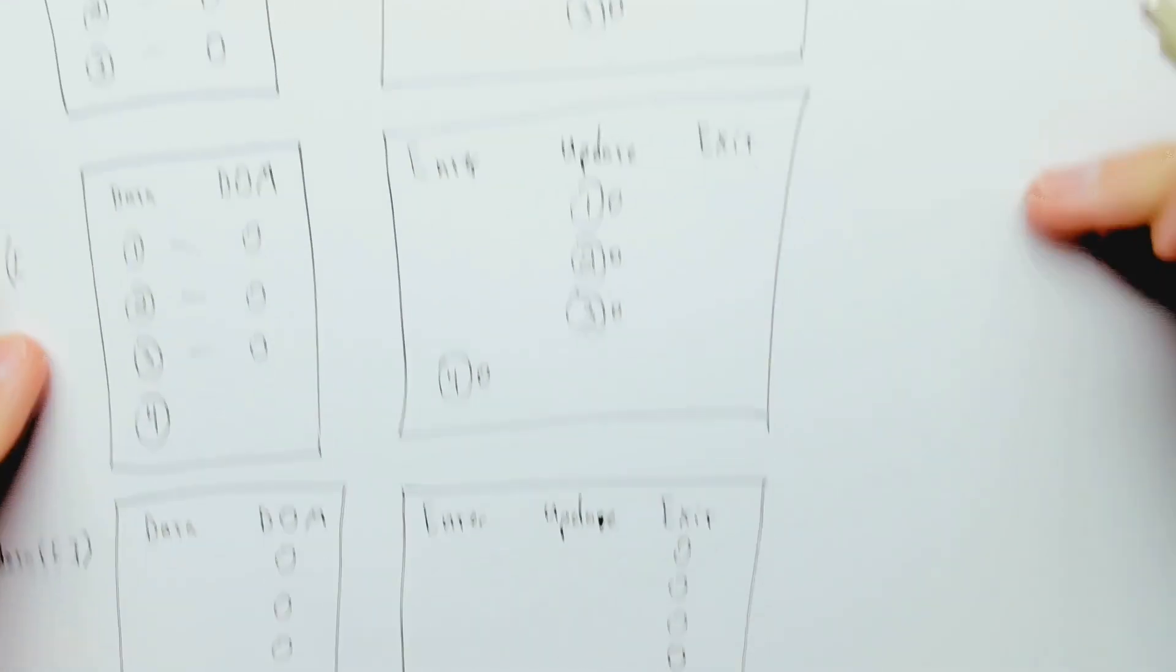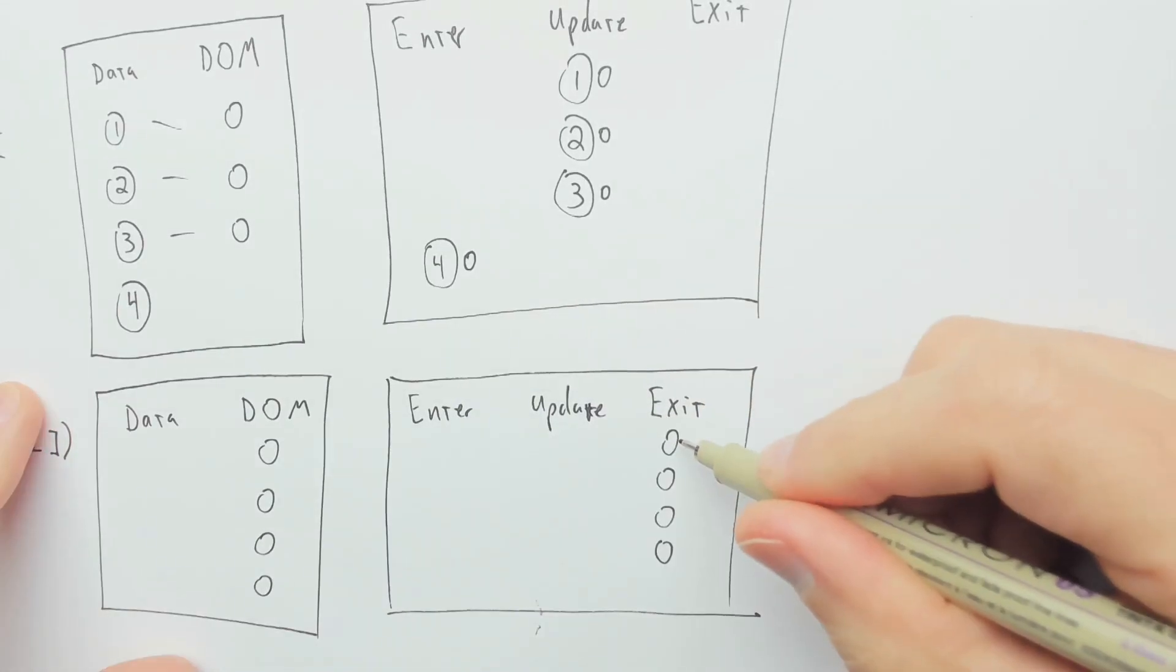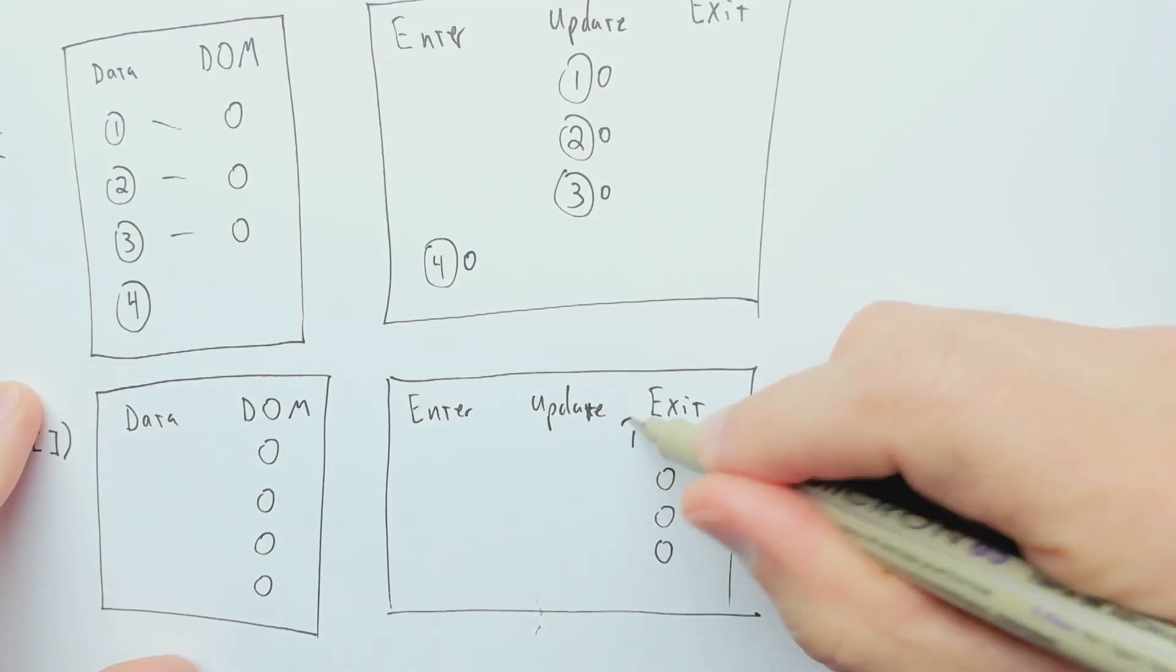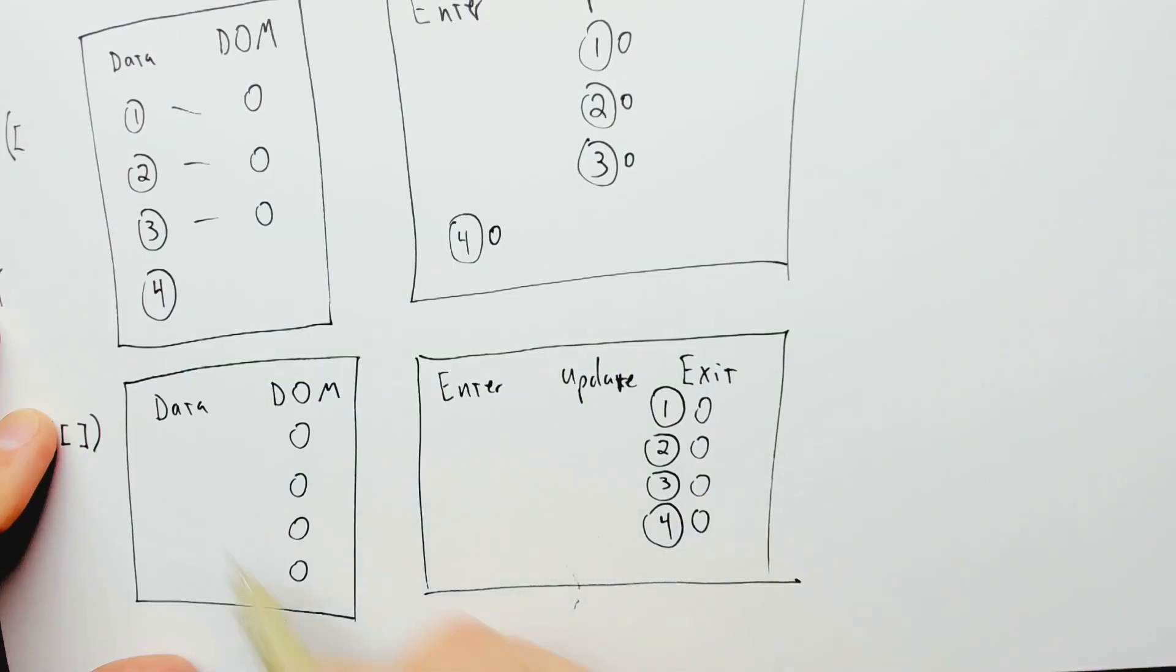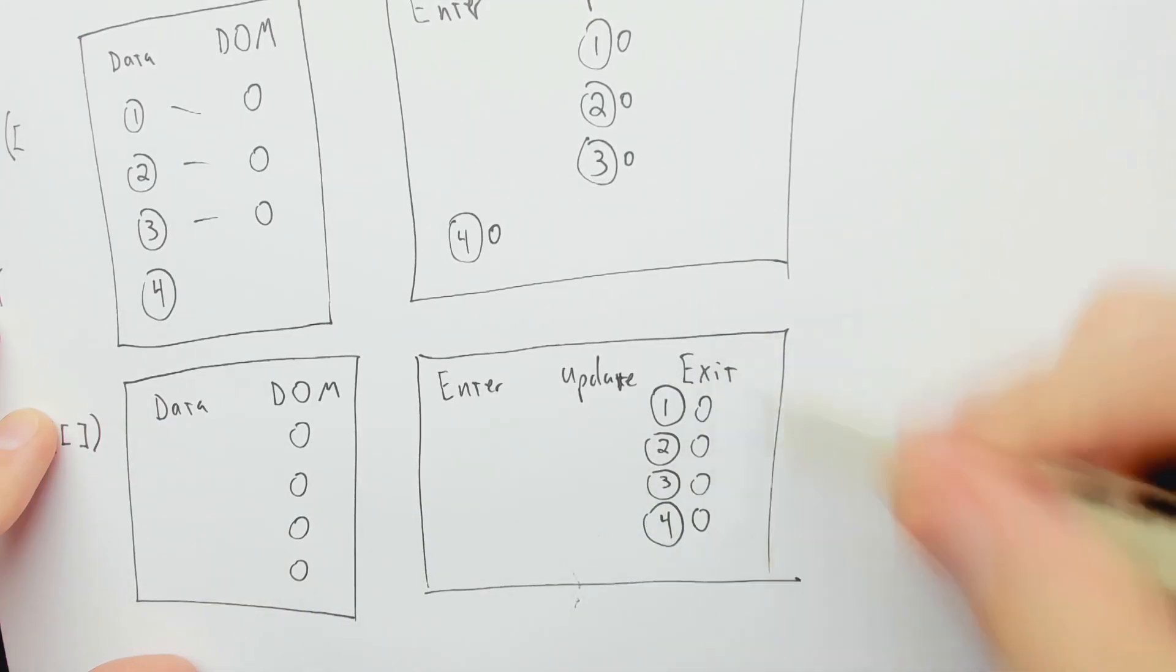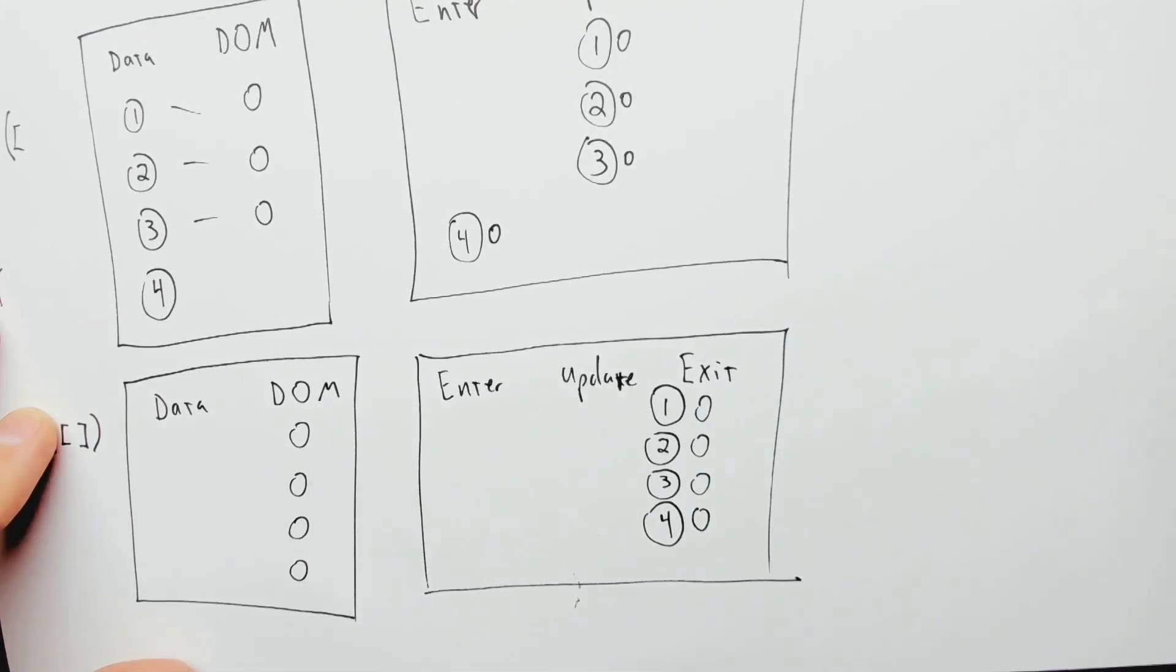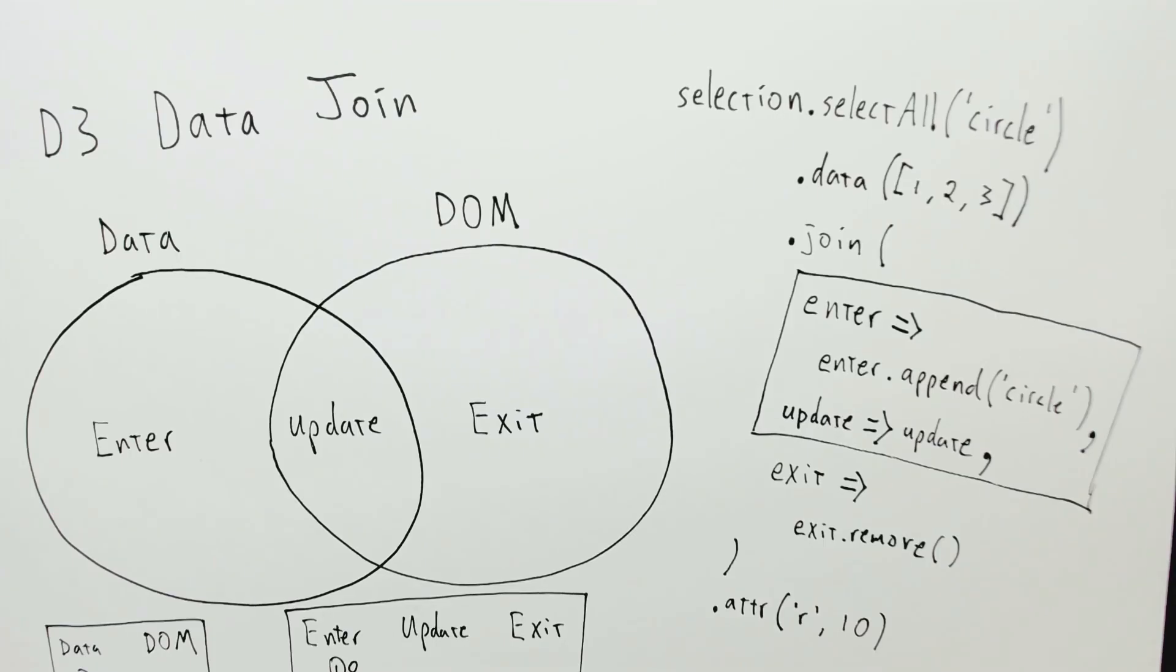And even in the exit case, these DOM elements still have these data elements associated to them. Even though the new data is empty, the existing DOM elements have these data elements sort of attached to them. That's why you can still access the data in the exit selection, which we'll see when we start working with transitions. I hope you enjoyed this conceptual overview of D3 data joins.